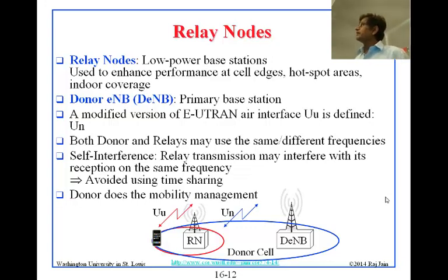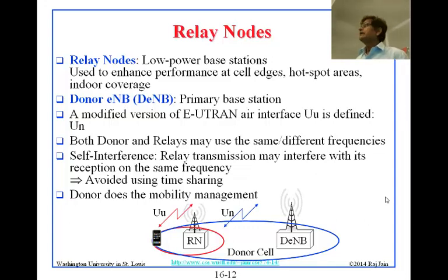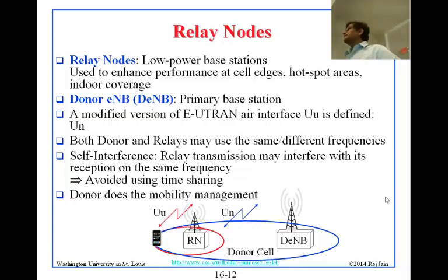A modified version of the E-TRAN air interface, UU, is defined — there is a new interface UU and this is UN. Both donor and relays may use the same or different frequencies. Self-interference — where relay transmission may interfere with its own reception on the same frequency — is avoided using time-sharing, essentially CoMP. The donor cell handles mobility management: if a mobile moves from this cell to the next, the donor handles it, since the relay node is limited and does not know about other cells.